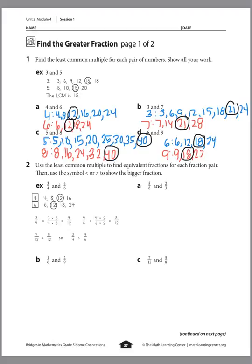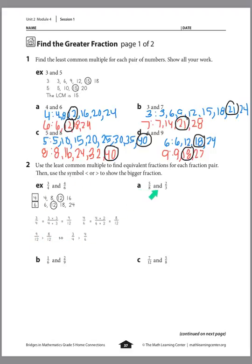Moving on to number 2: use the least common multiple to find equivalent fractions for each fraction pair, then use the symbol less than or greater than to show the bigger fraction. We've changed them into equivalent fractions and we're comparing the two fractions. Let's try it for A.